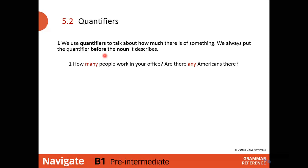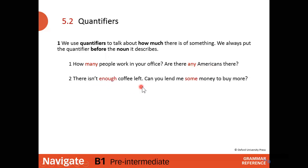For example: 'How many people work in your office?' — here 'many' is the quantifier and 'people' is the noun. 'Are there any Americans?' — 'any' is the quantifier and 'American' is the noun. 'There isn't enough coffee left' — 'enough' is the quantifier and 'coffee' is the noun.